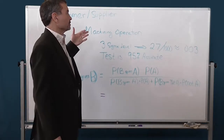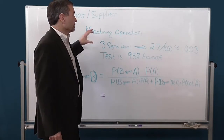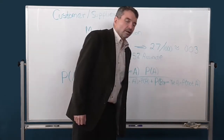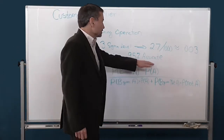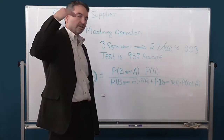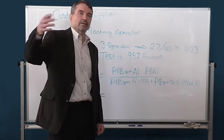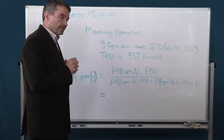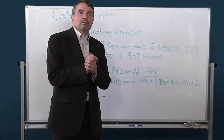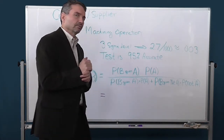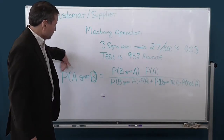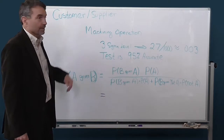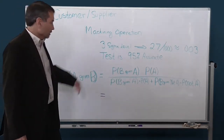Let's take a machining operation that was not particularly good and was running at a three-sigma level, with a defect rate approximately equal to 2.7 out of a thousand — we'll round that down to 3 out of a thousand, or 0.003. The test at the customer's facility is 95% accurate, meaning there's a 5% false rate. The customer calls you and says they've got a bad part — what can Bayesian statistics do for you? The probability of A given B here is the probability that you really do have a bad part given that the customer measured one and found it bad.